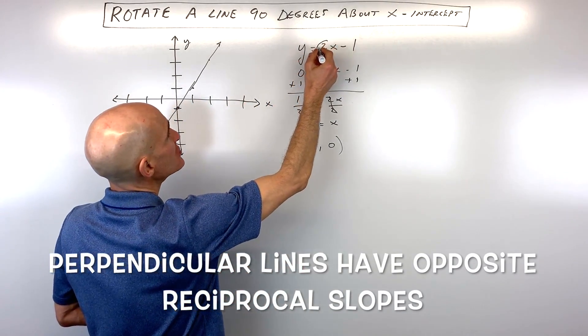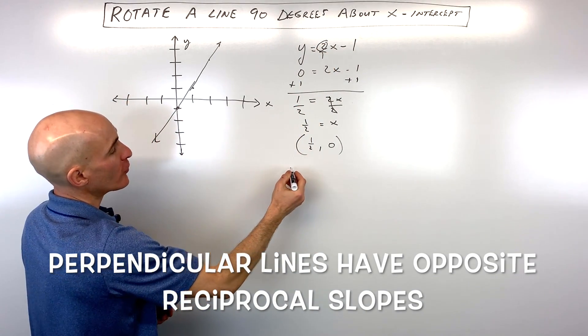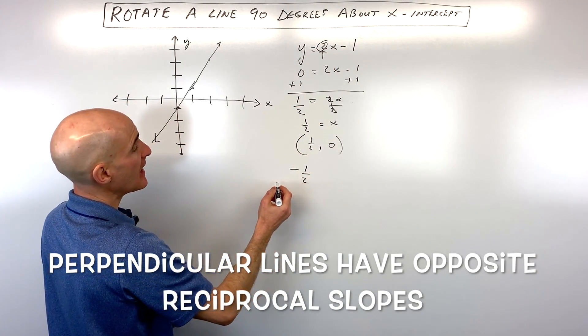So in this case, we know that the slope is 2. If we flip that over and make it the opposite, the slope is going to be negative 1 half.